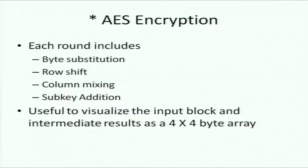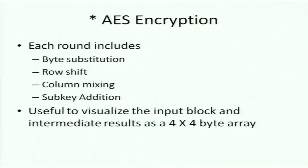Each round has four steps: byte substitution, row shifting, column mixing, and sub-key addition — where 'addition' means exclusive OR. It is useful to visualize the input block and intermediate results as a 4×4 array of bytes. Each byte is 8 bits, giving a total of 128 bits.